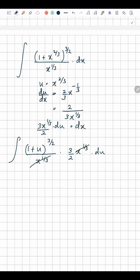You can see these two cancel off. And now when integrating 1 plus u to the power 3 over 2, you could write 1 plus u to the power 5 over 2, over 5 over 2 times 3 over 2, plus c.